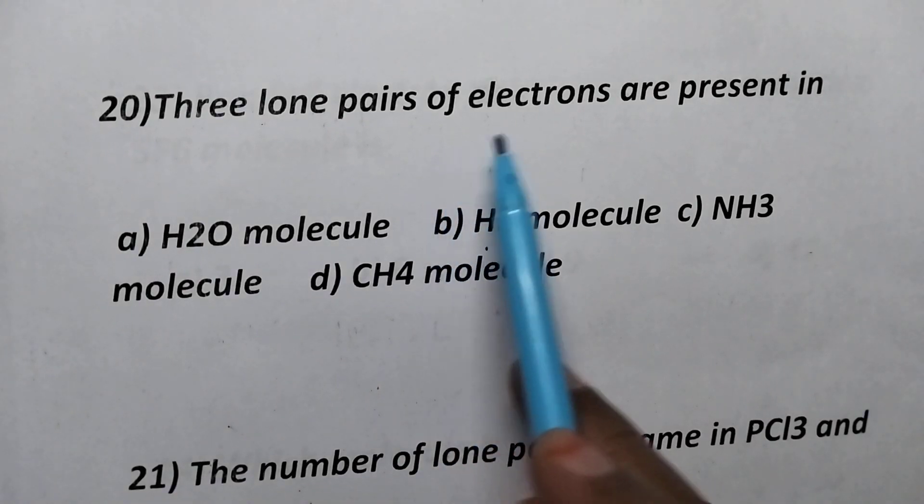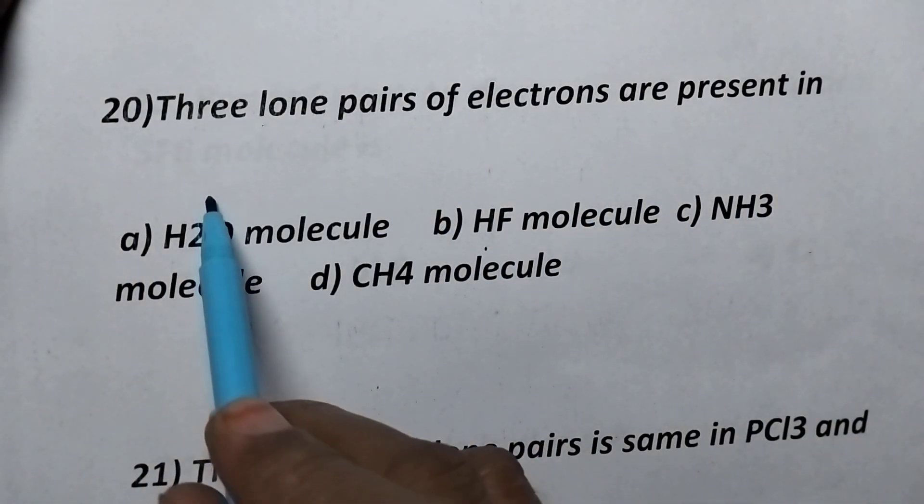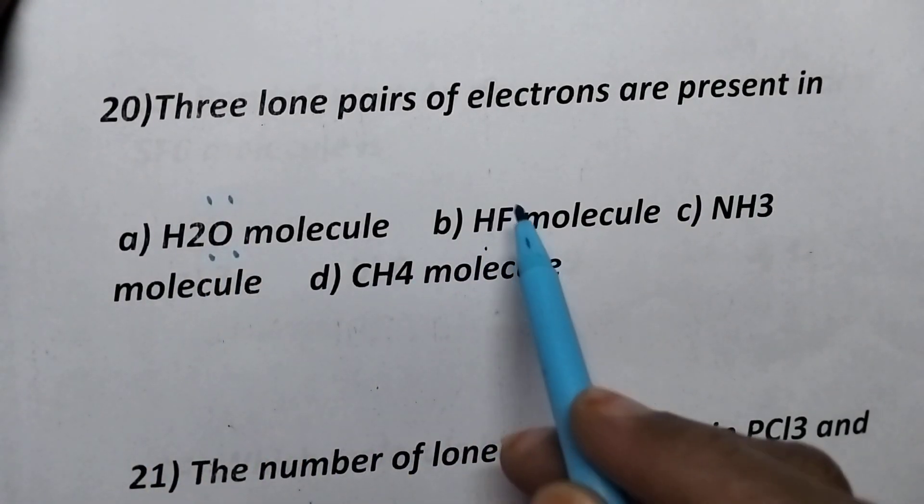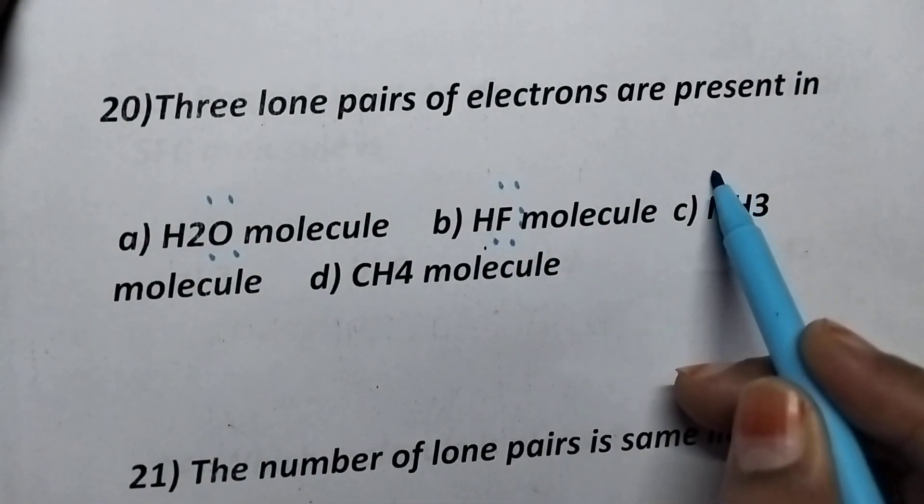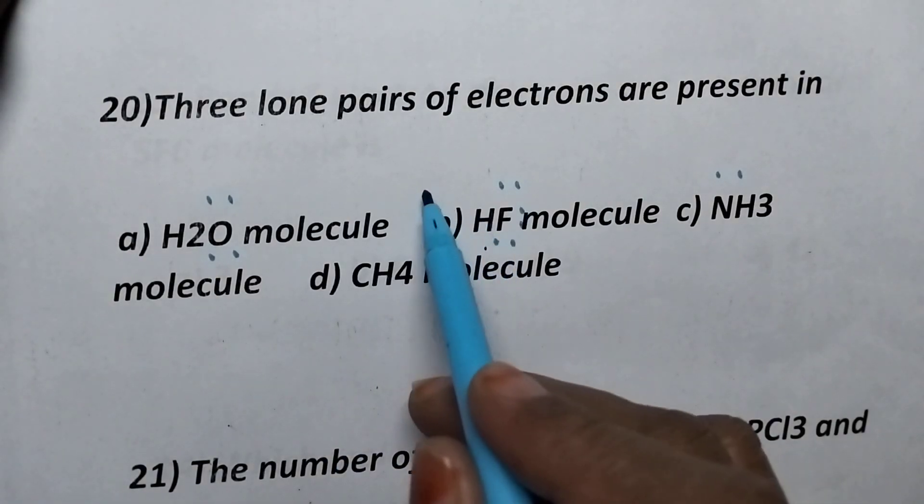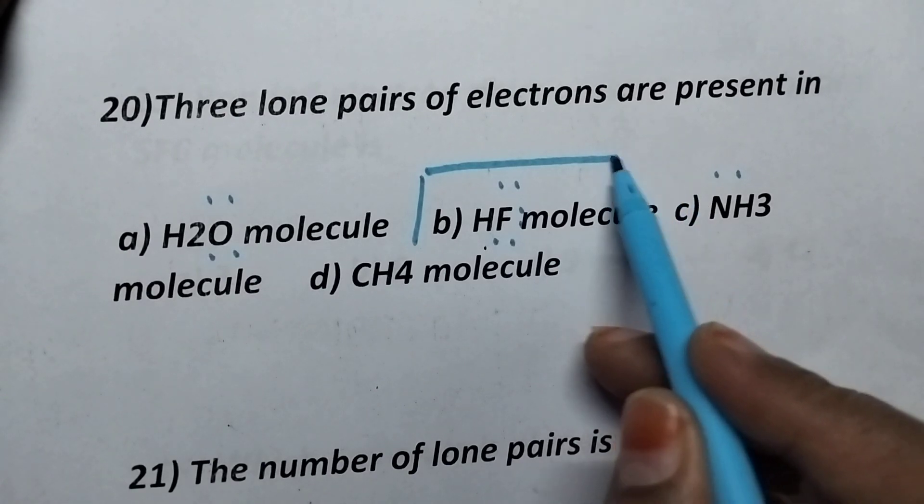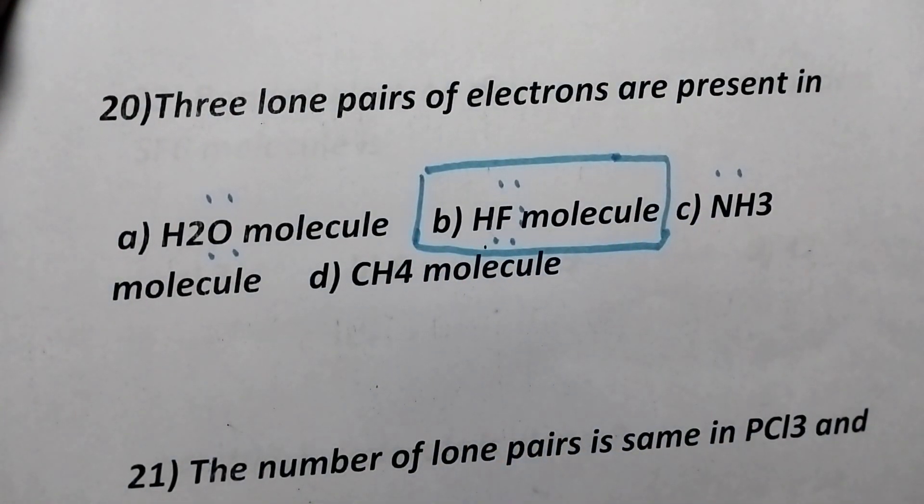Three lone pairs of electrons are presented. Coming to the water molecule, oxygen contains two lone pair of electrons. Coming to the HF molecule, it contains three lone pair of electrons. Ammonia contains only one lone pair. Methane will not have any lone pair of electrons. So, HF molecule contains three lone pair of electrons. So, option B is the right answer.